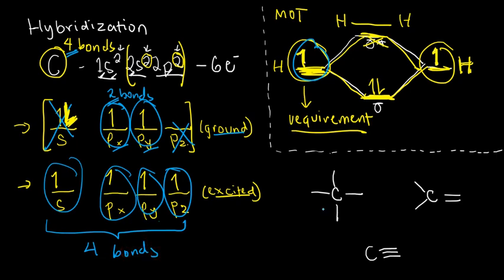However, in order to completely understand how carbon bonds, we don't need to know only how many bonds are present, but also what type of bonds or overlaps there are. In order to refresh on this detail, remember that S and P orbitals have actual shapes, and we need to know what type of overlaps can occur between two orbitals.